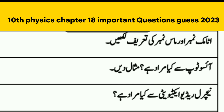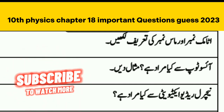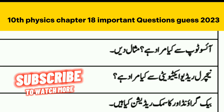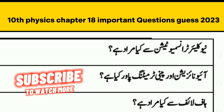Question Number 2: Isotopes. Question Number 3: What is natural radioactivity? Then we have background cosmic radiation — what is it called?